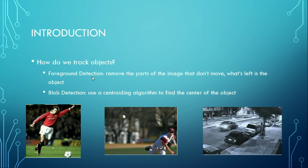we can use blob detection. The simplest way to understand this is it's a centroiding algorithm to help us find the center of the object. Once we've done that, we'll be able to track things that move.